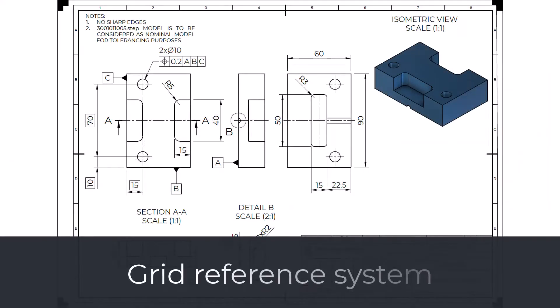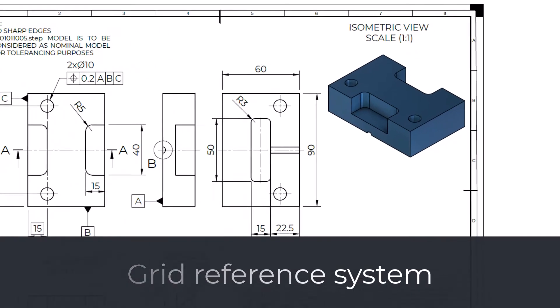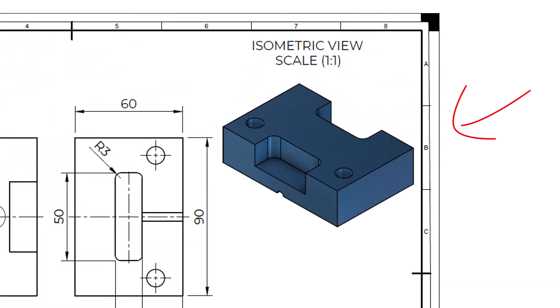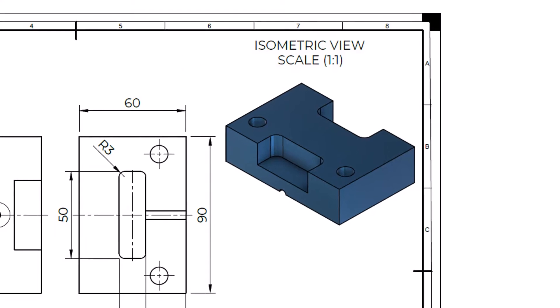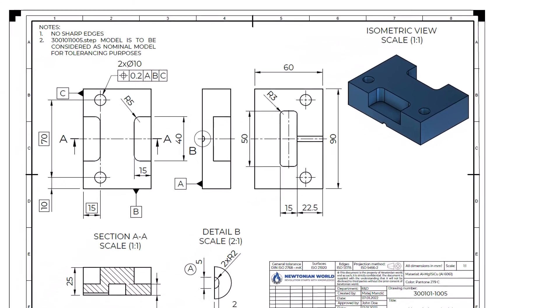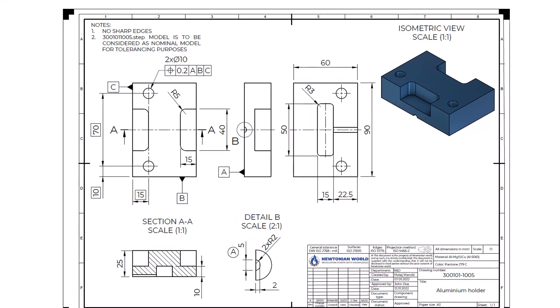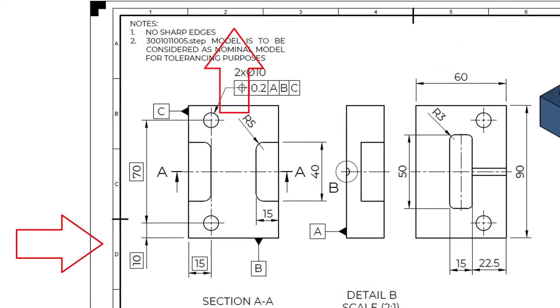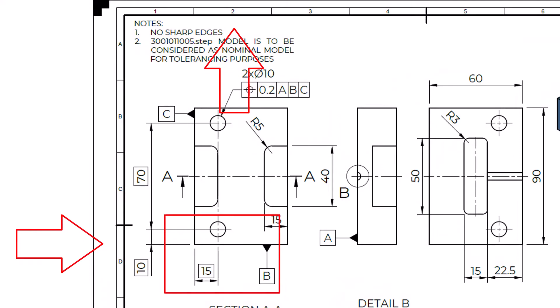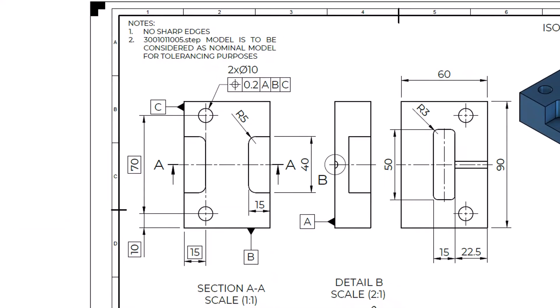Grid Reference System. The grid reference system is used to easily locate different elements of the engineering drawing. It is divided into fields where vertical fields are defined with letters and horizontal fields with numbers. For example, imagine you are in a meeting and want to point out one dimension — you could easily say it is located on the left view. But the easiest way is to say: look at field D2, you can see a 15mm distance between the edge and the center of the hole. This drawing is simple, and you might think this is unnecessary.